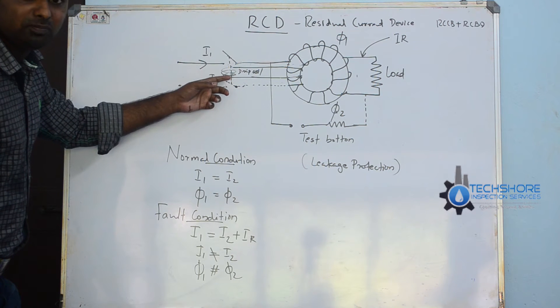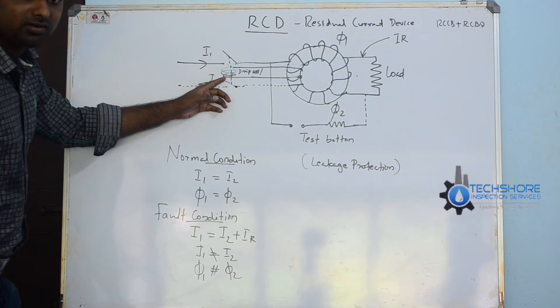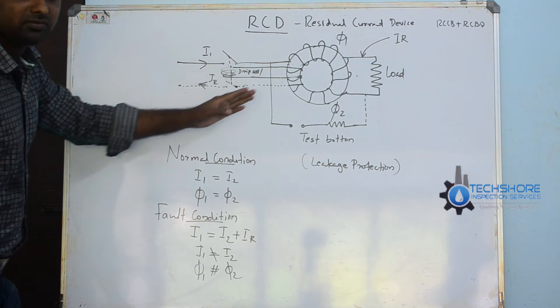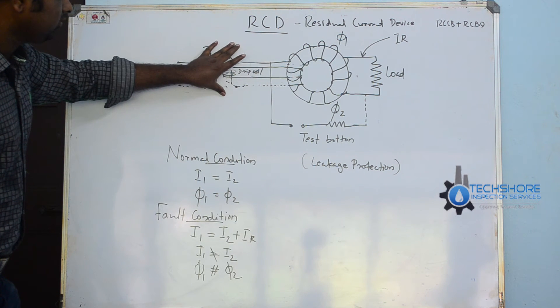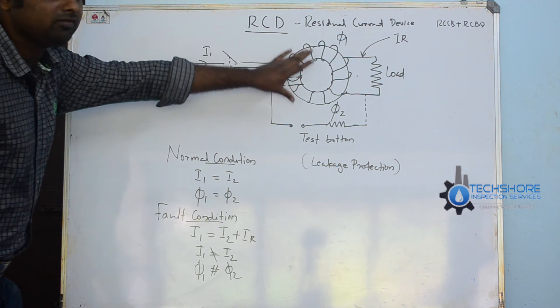Then it is connected to the trip coil. It is shown in figure. Then it will trip down and the switch will be in off position. Then the supply will be cut.